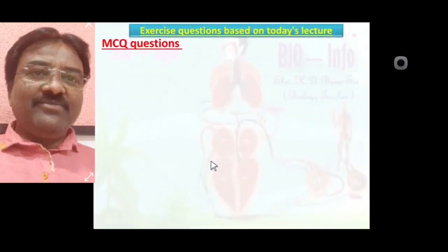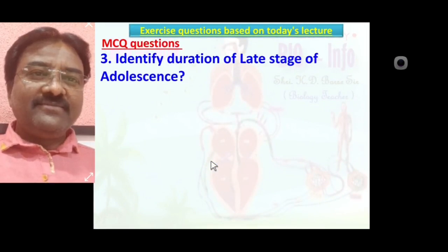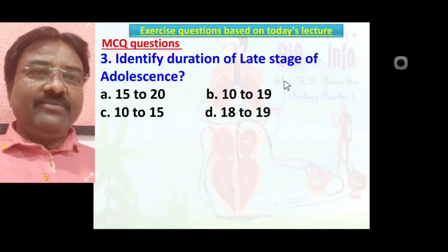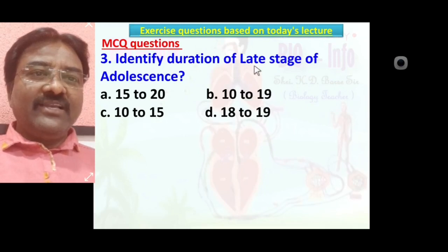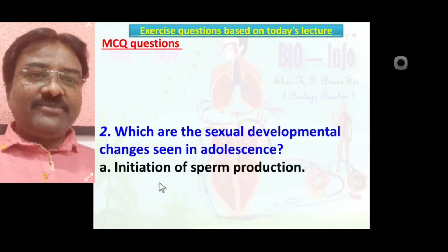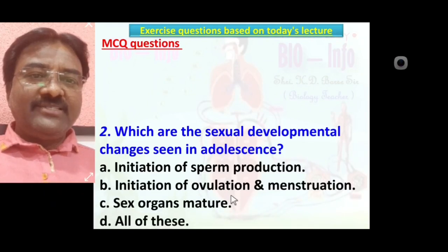MCQ number three: Identify the duration of late stage of adolescence. Options: 15–20, 10–19, 10–15, or 18–19 years. MCQ number four: Which are the sexual development changes seen in adolescence? Options: initiation of sperm production; initiation of ovulation and menstruation; sex organs mature; or all of these. Yes — all of these.